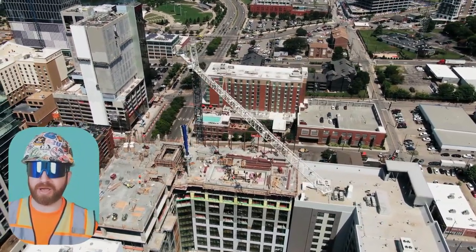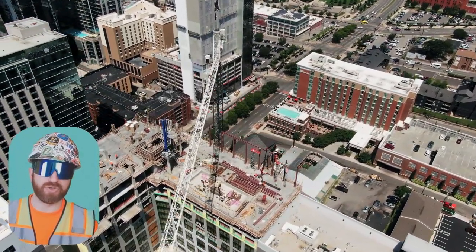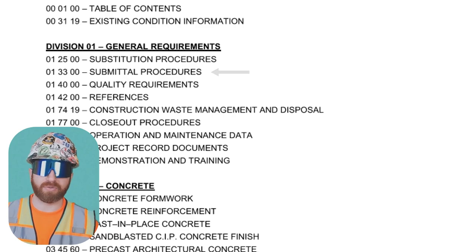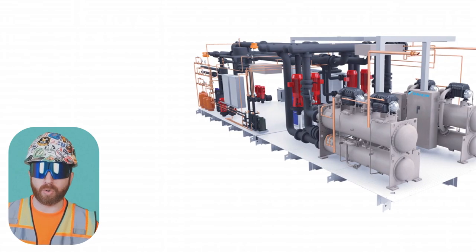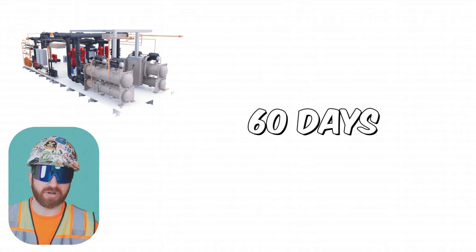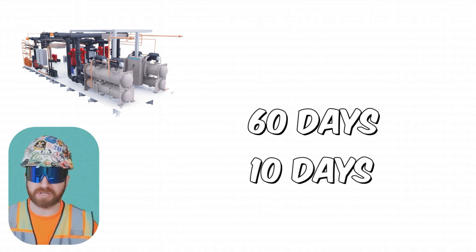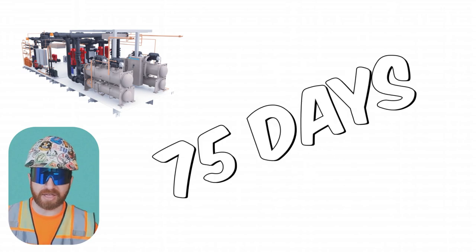Project management is really just managing risk, so where can risk be introduced into the submittal process? It's usually schedule related. The submittal specification section should outline the terms for reviewing submittals and returning them. For example, if you're ordering a large piece of equipment that takes 60 days to arrive from the manufacturer, and the spec section allows a 10-day review period, and it takes five days on the front end to prepare the submittal — that's 75 days, or two and a half months, before the material arrives.